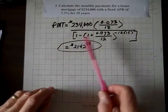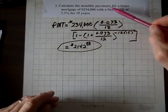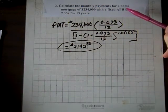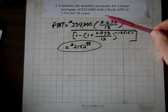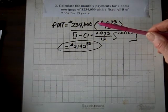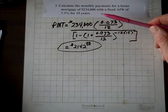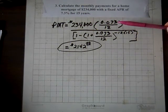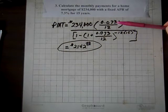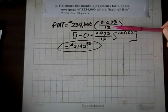Now we're doing question three from that 4D worksheet. It says, calculate the monthly payments for a home mortgage of $234,000 with a fixed payment or fixed APR of 7.3% for 15 years. So referring to the formula that we started off with, the principal is $234,000, the APR is 7.3% or 0.073. There's 12 payments in a year because they're paying monthly.